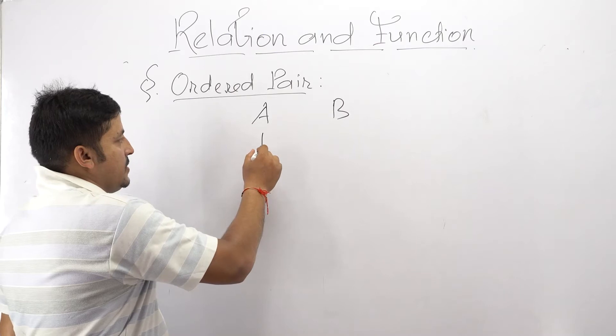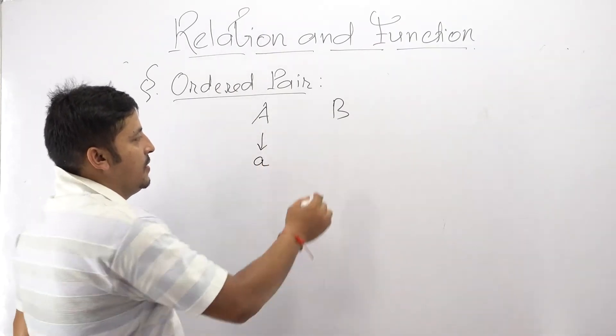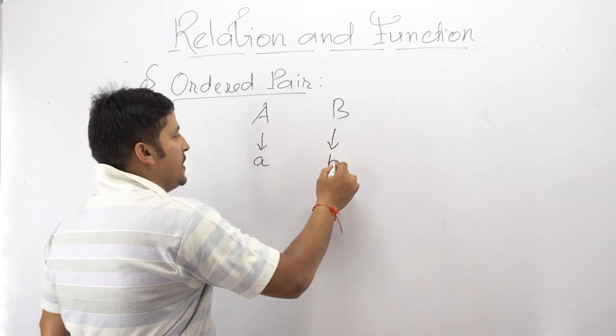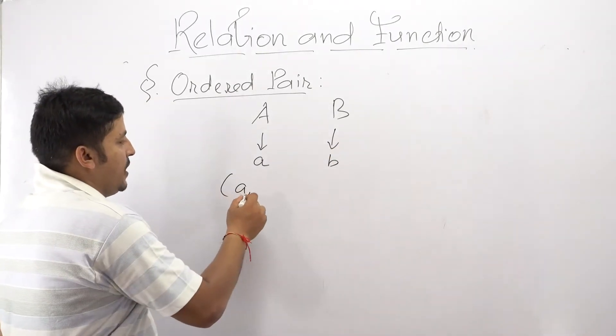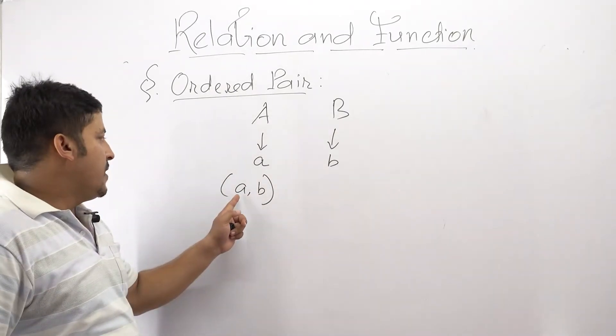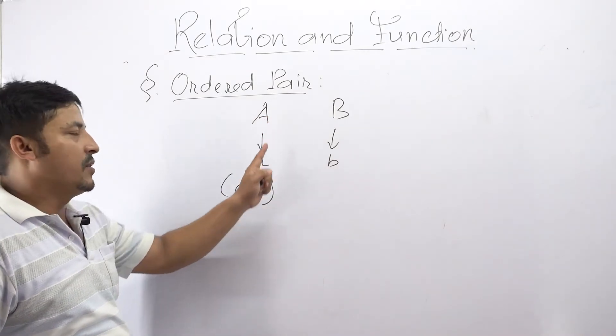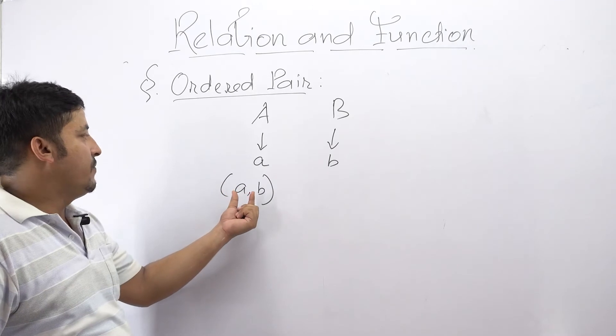Then suppose small a is an element of capital A and small b is an element of capital B, then we will construct the ordered pair small a comma b in such a way that the first element belongs to the first set and the second element belongs to the second set. In this way the ordered pair can be defined.